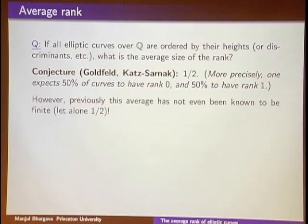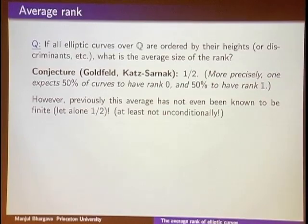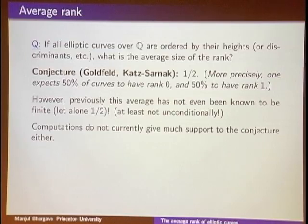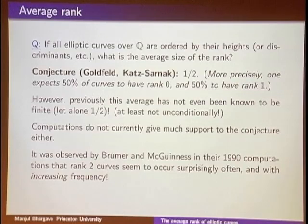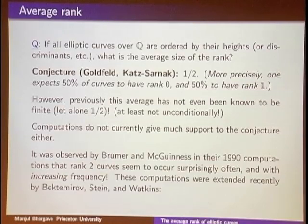Previously, this average hadn't even been known to be finite, at least not unconditionally. And computations don't give much support: extensive computations by Brumer and McGuinness in 1990 found that rank-2 curves — which should occur 0% of the time — were appearing more and more often, reaching about 20% as A and B grew. These computations were extended by Bektemirov, Stein, and Watkins, who continued to find the proportion of rank-2 curves increasing.